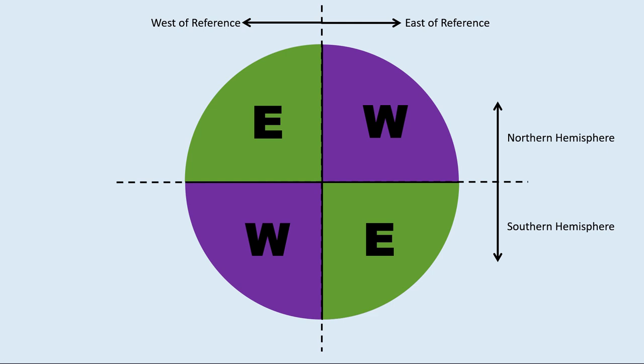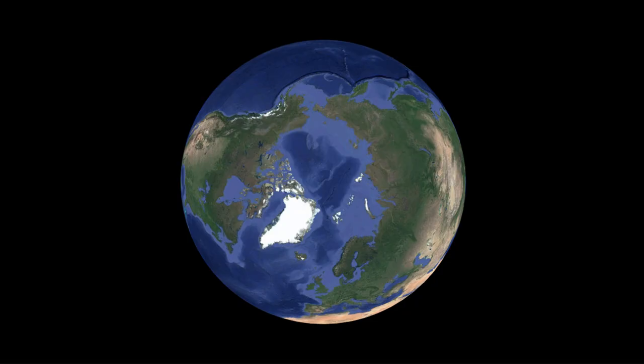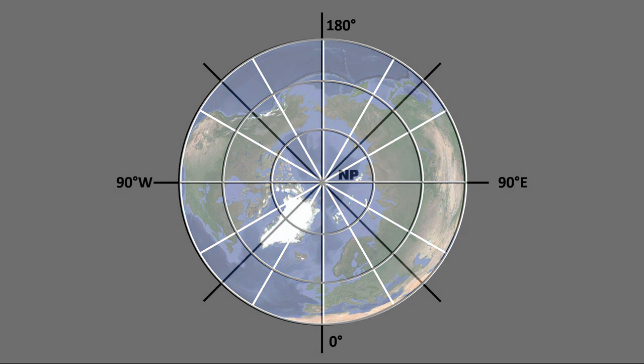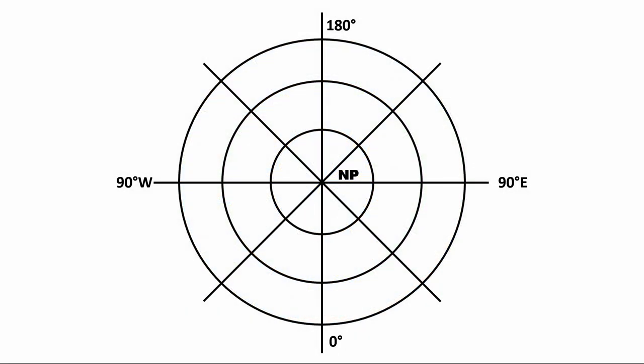Now we will look at the relation between true north and grid north using the graphical method. This is a picture of the earth viewed from above the north pole. The white lines are the graticule. All meridians converge towards the north pole, and the direction toward the north pole — represented by the red chevron — is true north. For this diagram, the reference meridian is 0 degrees longitude — the prime meridian — placed at the bottom of the diagram to ensure grid north points toward the top.